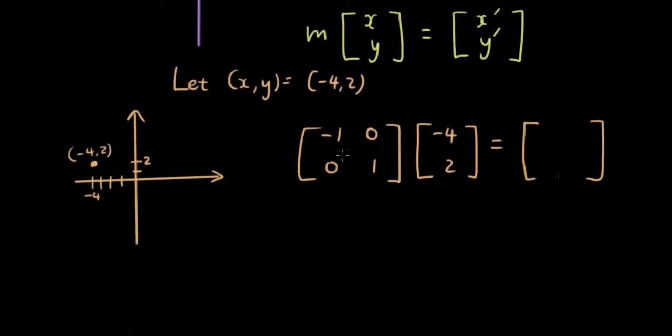We have negative 1 times negative 4 plus 0 times 2, so the answer is 4. 0 times negative 4 plus 1 times 2, so the answer is 2.